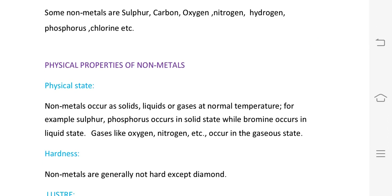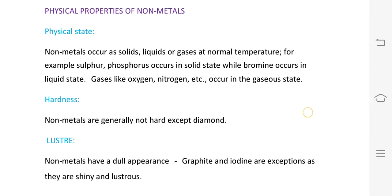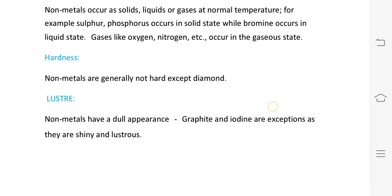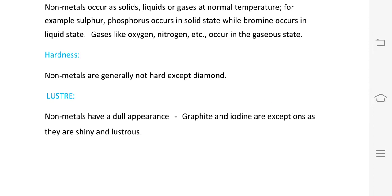Physical properties of non-metals — physical state: non-metals can be solid, liquid, or gas at normal temperature. For example, sulfur and phosphorus are in solid state, bromine is in liquid state, and oxygen and nitrogen are in gaseous state. Hardness: non-metals are generally not hard, except diamond.